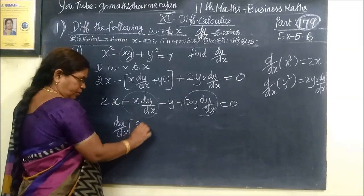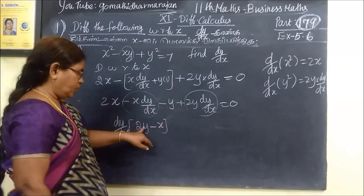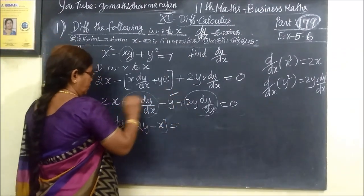dy/dx is common. Then plus 1 is equal to 0. That's minus 2y. You can give minus x is equal to 0.